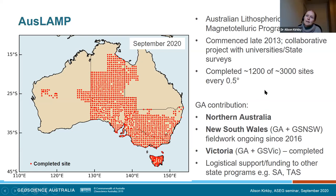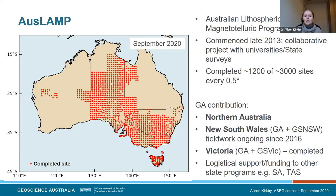Auslamp — the Australian Lithospheric Architecture Magneto-Telluric Program — started in late 2013. It's a collaborative project between universities, state surveys and GA. Between us we've completed around 1,200 of 3,000 planned sites at every half degree of latitude and longitude. GA has led programs in Northern Australia under Exploring for the Future, and in New South Wales and Victoria — which is what I'm talking about today — in collaboration with each of those state surveys.